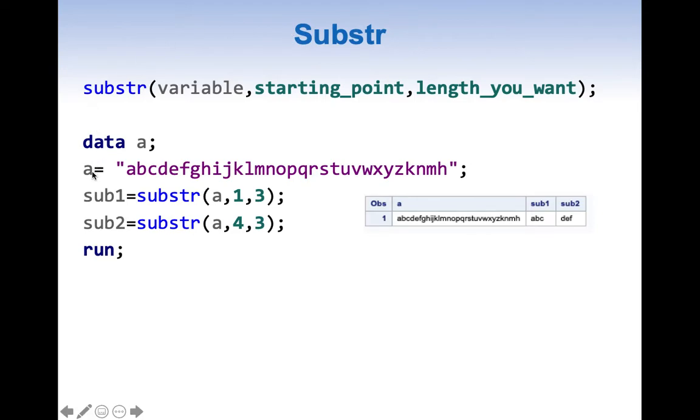Here in our data step we're creating a variable a and two more variables using substr function. Here we're saying sub1 equal to substr a comma 1 comma 3. So a is our variable, 1 is our starting point, and 3 is the length we want. Starting from position 1 with length 3, we get abc as our result.